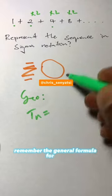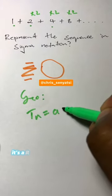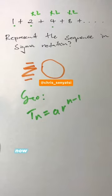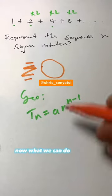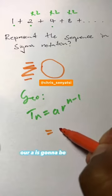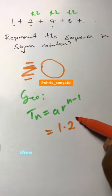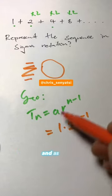Remember the general formula for that: Tn = ar^(n-1). Now what we can do is look at this. Our a is going to be 1 - this is the first term. Then our ratio is going to be 2. This gives us Tn = 1·2^(n-1).